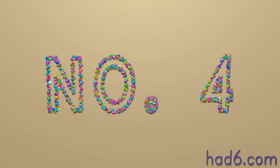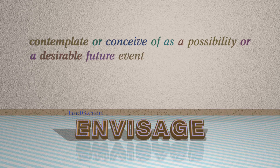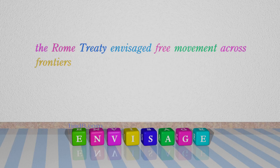Number 4: Envisage, which means contemplate or conceive of as a possibility or a desirable future event. For example: The Rome Treaty envisaged free movement across frontiers.